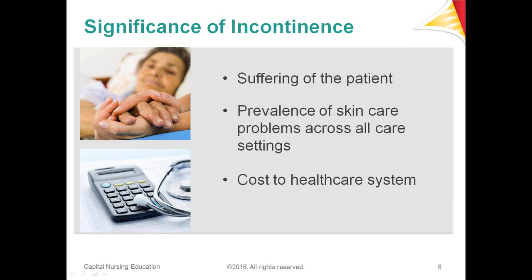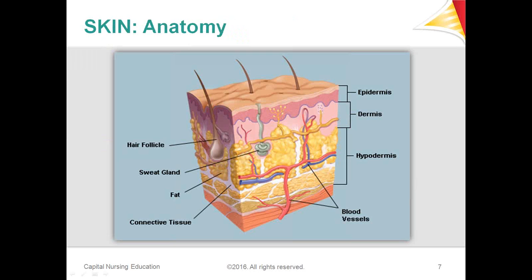To talk about this, we need to talk about what's normal — what is skin all about. Skin is the largest organ in the body, comprising 16% of total body weight.